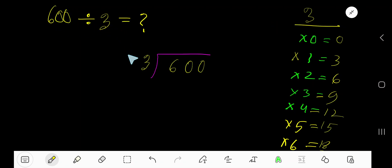600 divided by 3. 3 is a divisor, so we need the multiplication table of 3. 3 times 0 is 0, 3 times 1 is 3, 3 times 2 is 6, 3 times 3 is 9. To find the multiplication table of 3, just add 3 with the previous step: 0 plus 3 is 3, 3 plus 3 is 6, 6 plus 3 is 9.